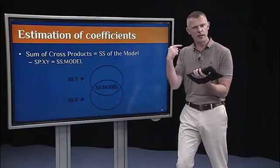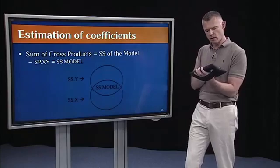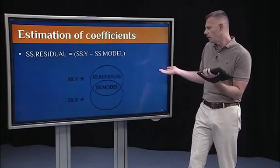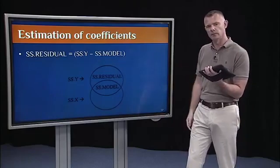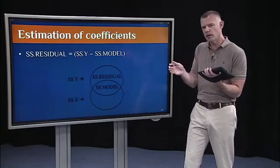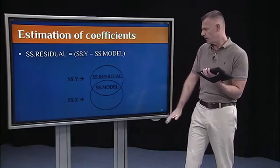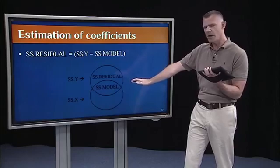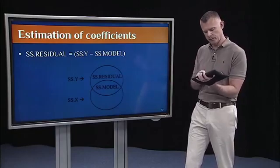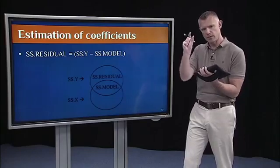So again, how can we think about sum of squares residual? Well, it's just what's left over in Y. So it's the unexplained variance in Y. So here where we're doing just a simple regression, this is easy. We just have some of the variance in Y is explained by the model, some of it is unexplained. That's the residual. And again, the goal is to minimize the residual.